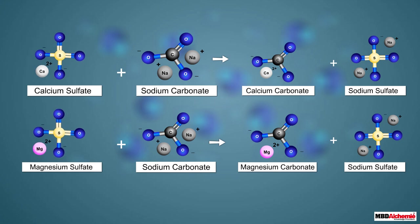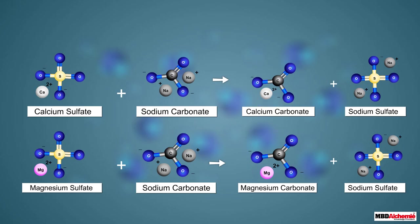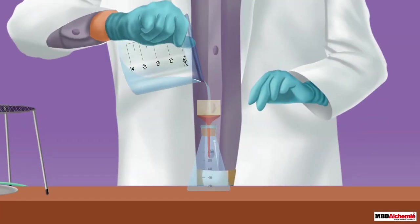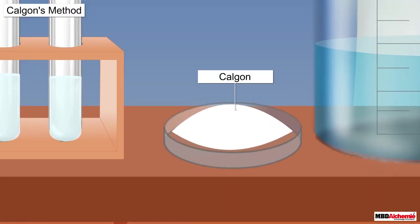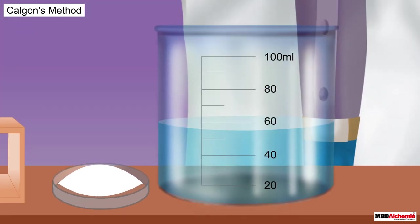At the same time, washing soda also combines with the sulfate salts of calcium and magnesium to form their corresponding carbonate salts, along with sodium sulfate. The carbonate salts of calcium and magnesium do not dissolve in water and form a precipitate. The precipitate is removed by filtration, freeing the water of calcium and magnesium ions so it no longer remains hard.